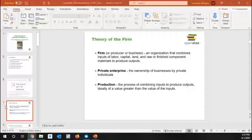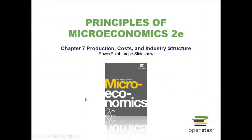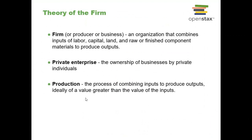On that note, let's talk about the theory of the firm. Why is it that we have a firm? Firms exist as a way of reducing transaction costs. We have not talked about transaction costs yet in this class — when we talk about externalities in a couple of videos, we will go into more detail. A transaction cost is the cost to find someone to exchange with.